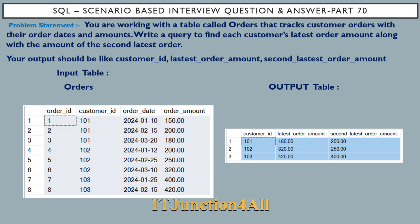First, the problem statement: you are working with a table called 'orders' that tracks customer order information, with columns having customer ID, order date, and order amount. Customer IDs include 101, 102, and 103.